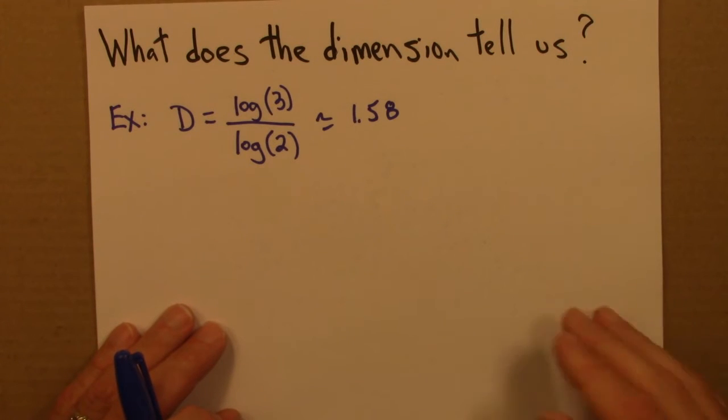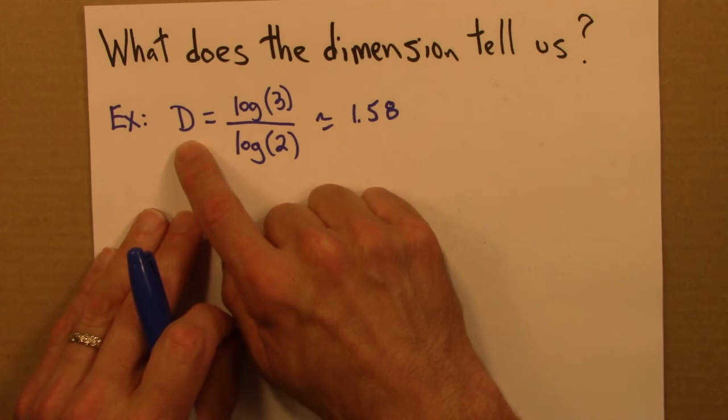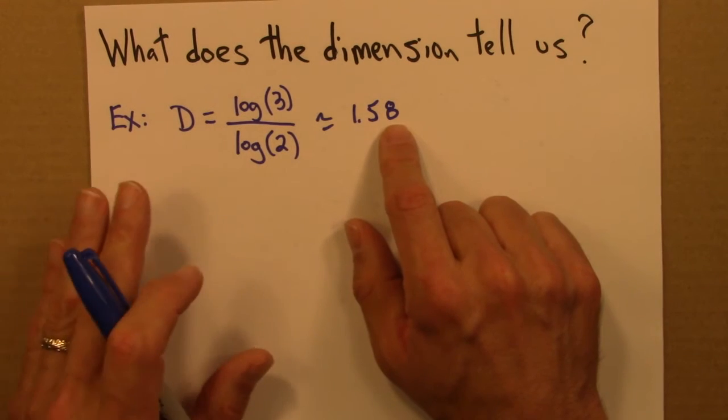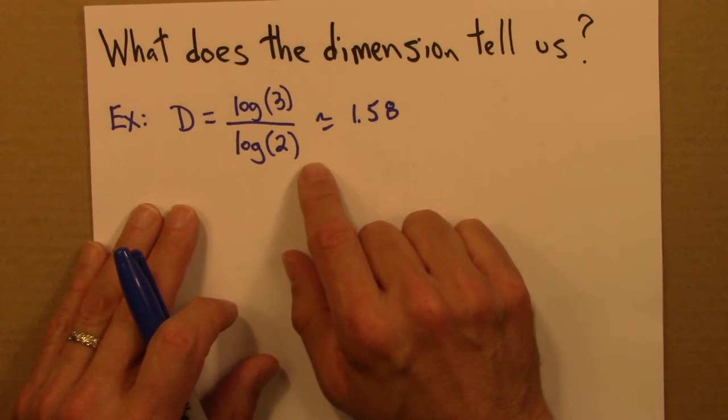So here's an example. Suppose we are told that the dimension of some object is log 3 over log 2, and that turns out to be about 1.58. What does that tell us? What do we know?